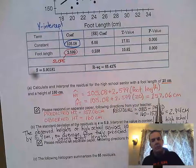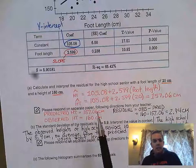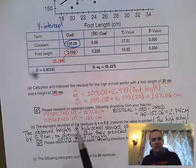We get 157.06 centimeters. The predicted height is 157.06 centimeters and the observed height is 160 centimeters. The formula you need to remember for residual is observed minus predicted.